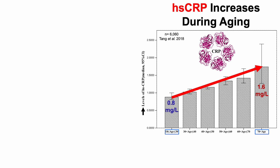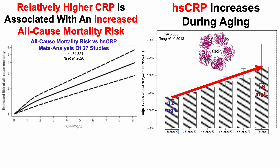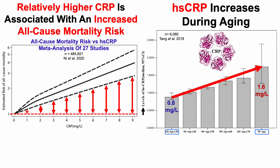The age-related increase for CRP is potentially important because a relatively higher CRP is associated with an increased all-cause mortality risk. This is a meta-analysis of 27 studies that included more than 480,000 people for the association between all-cause mortality risk and HSCRP. The dashed red line is at a hazard ratio of 1, and when the dashed black lines — the 95% confidence interval — are completely above or below 1, we have a statistically significant association. That's true for CRP greater than 1 mg per liter, so as CRP increases, we can see that increased association for all-cause mortality risk.